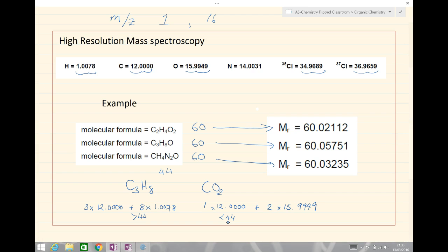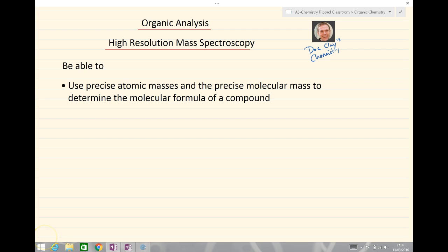That's pretty much all there is to know about high resolution mass spectroscopy. We've seen there the precision in the atomic masses. You should now be able to use precise atomic masses and the precise molecular mass to determine the molecular formula of a compound. Bye for now.